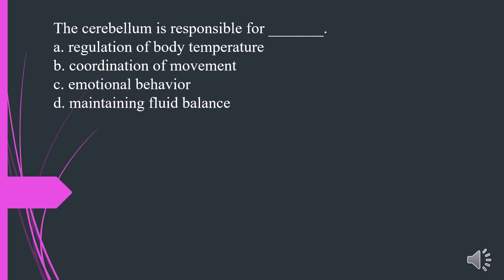The cerebellum is responsible for what? A. Regulation of body temperature. B. Coordination of movement. C. Emotional behavior. D. Maintaining fluid balance. The answer is B. Coordination of movement.